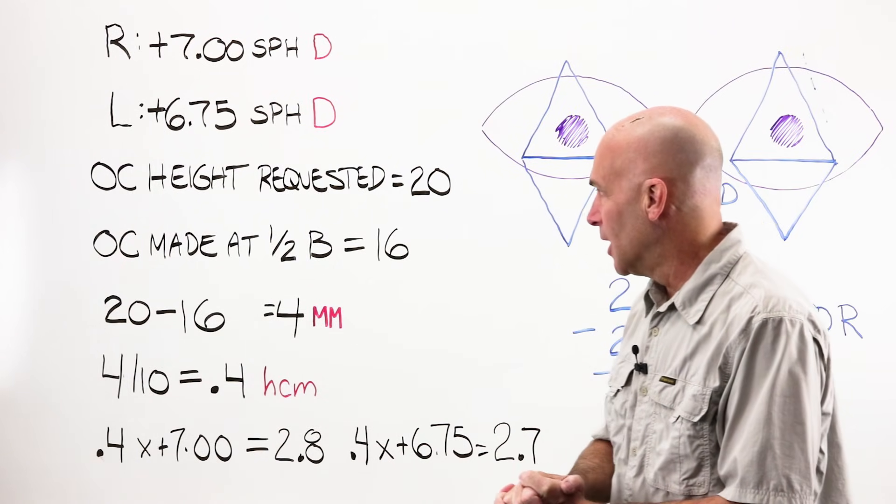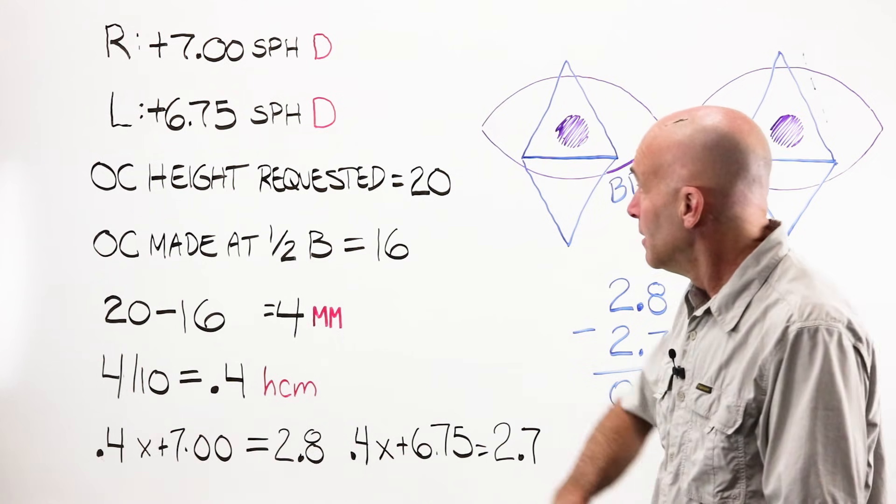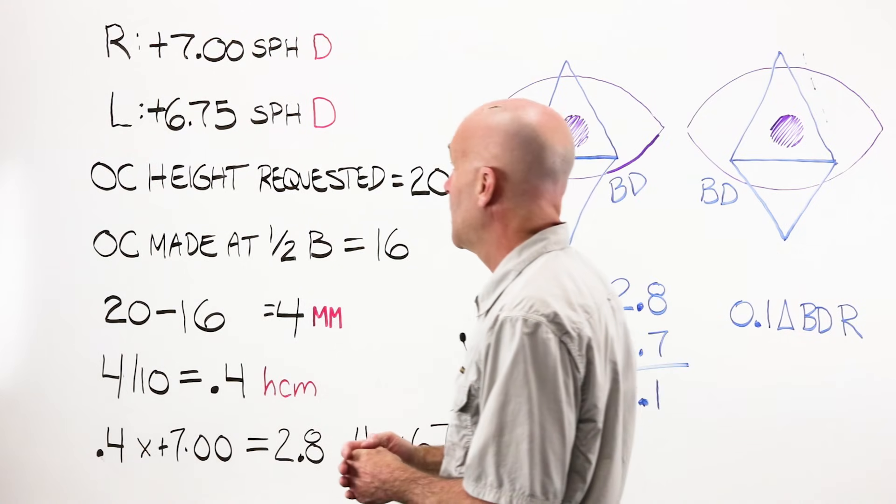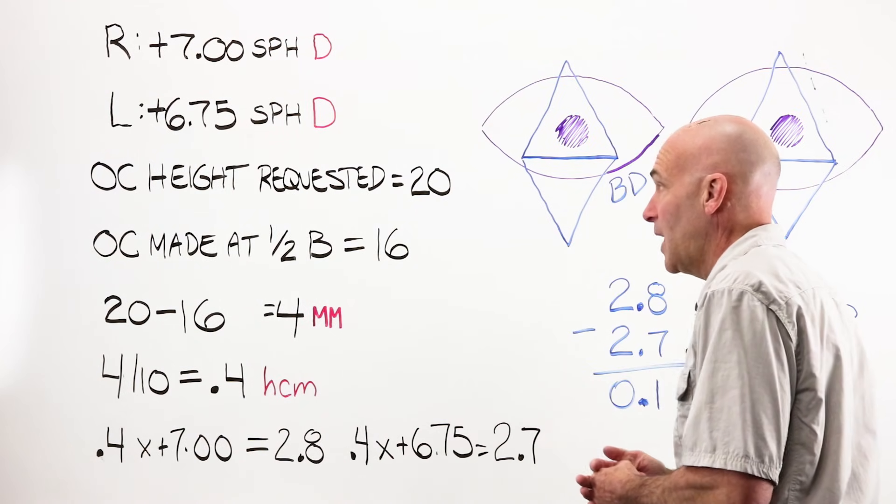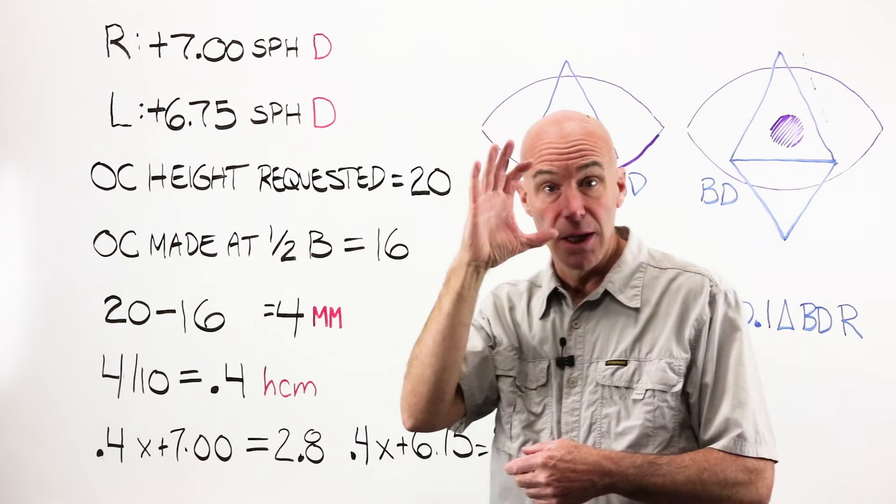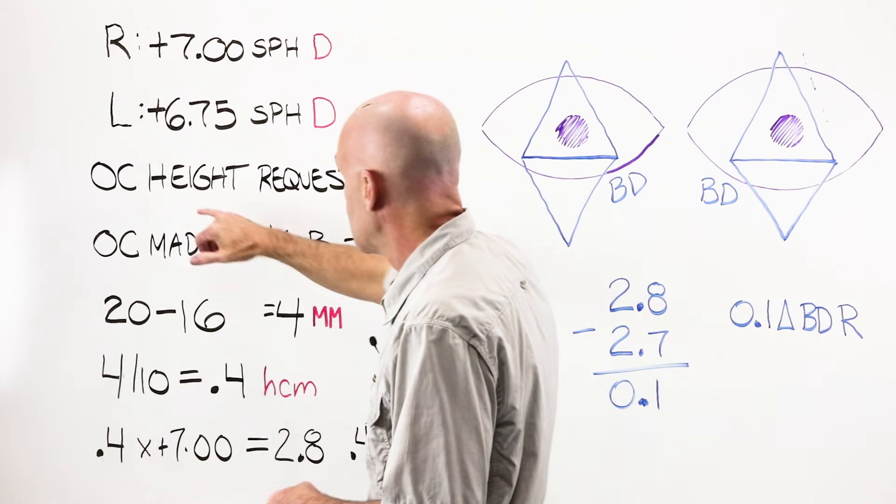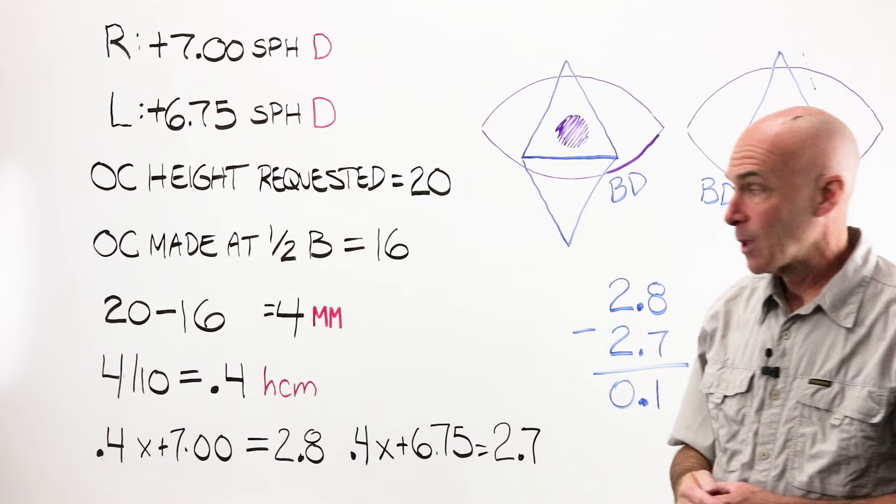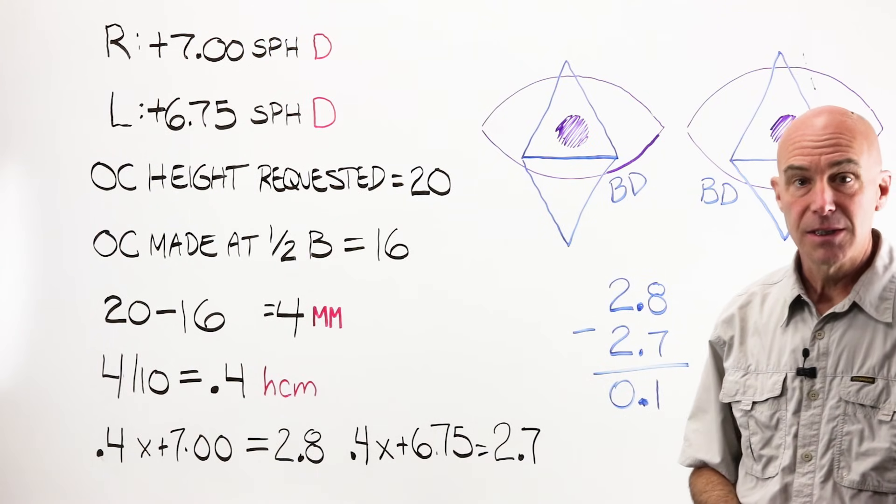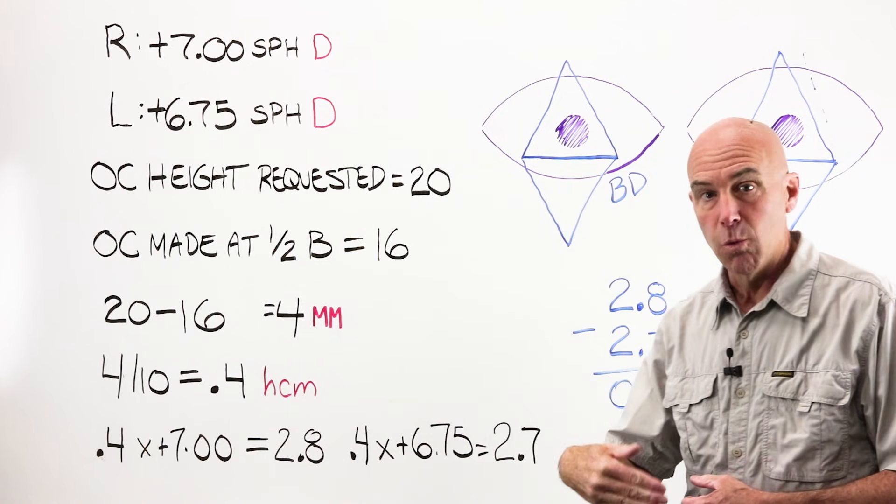Example number two of Prentice's formula. This time we're going to be doing something with an error in the number, and we're going to be talking about OC heights. Very typical prescription, we're still sticking with the sphere power. No worries about power and position in this particular case. We have a plus 7 and a plus 6.75. Power's pretty high. Put a pair of glasses on somebody and I felt that I wanted to do an OC height, meaning I wanted to move the lens OC up directly in front of their eye. Their eye sat above half the B, which is where it would normally be placed. So on my job order form, I wrote an OC height of 20. Lab ignored it and they made the OC at half the B, which is just kind of the default, which happens to be at 16.